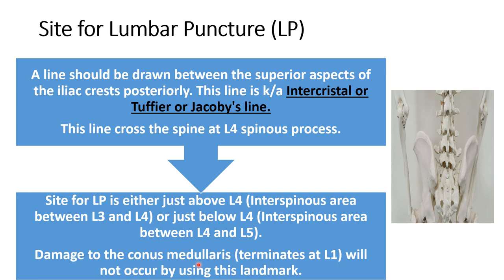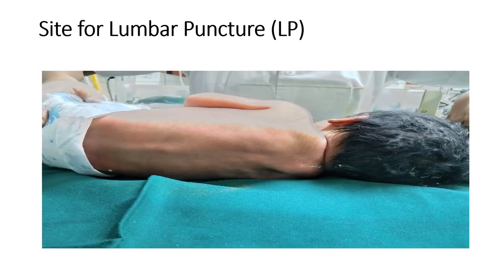We choose this area because the conus medullaris terminates at L1. In some patients — for example obese patients or female patients — it can terminate up to L2 as well. So we should prefer below this space so that damage to the conus medullaris will not occur. In this mannequin I am again showing the site: the imaginary line from the superior aspect of the iliac crests posteriorly is at the level of L4, above it is L3-L4, and below is L4-L5.